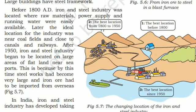Before 1800 AD, the iron and steel industry was located where raw materials, power supply, and running water were easily available. Later, the ideal location for the industry was near coalfields and close to canals and railways. After 1950, iron and steel industry began to be located on large areas of flat land near seaports, because steel works had become very large and iron ore had to be imported from overseas.